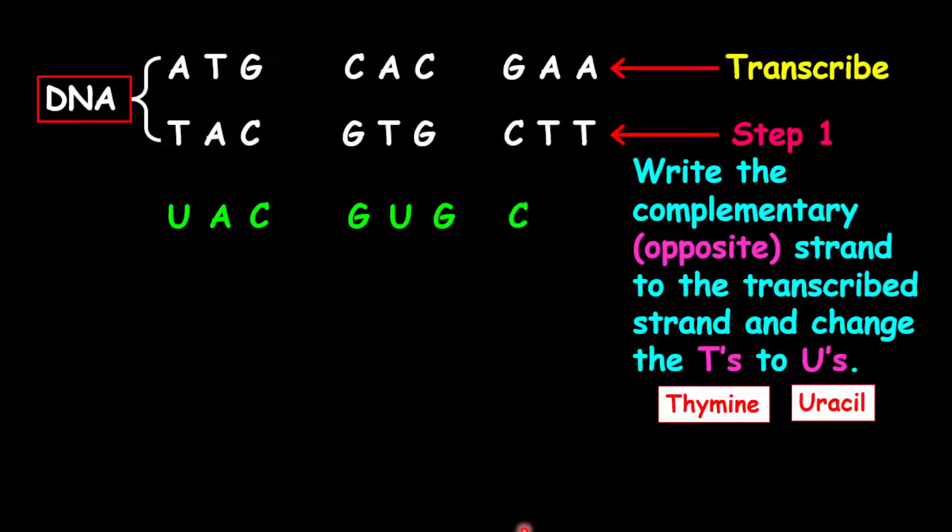Therefore U bonds to A, A bonds to U, C bonds to G, G bonds to C, U bonds to A, G bonds to C, C bonds to G, U bonds to A and the final U bonds to A. And this is now our tRNA which is our transport RNA.